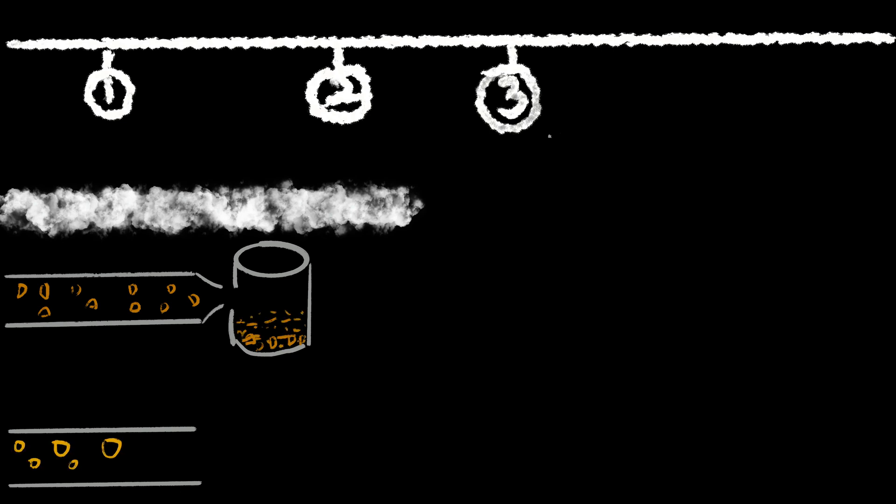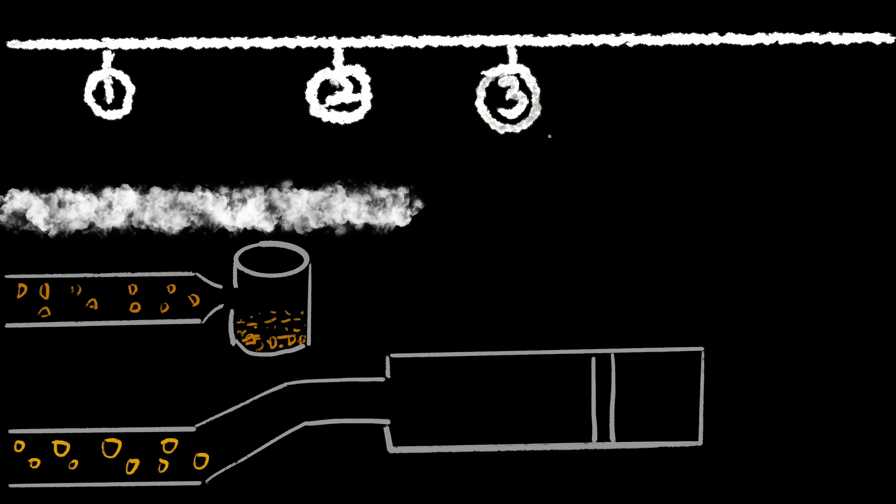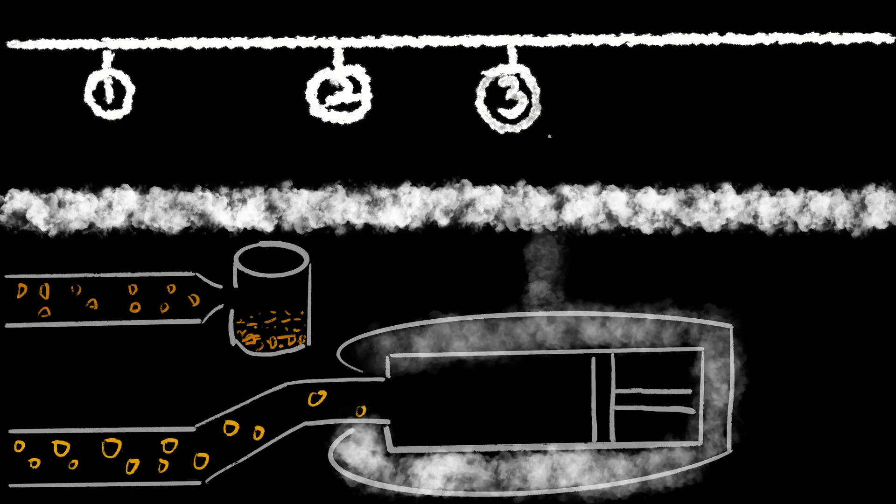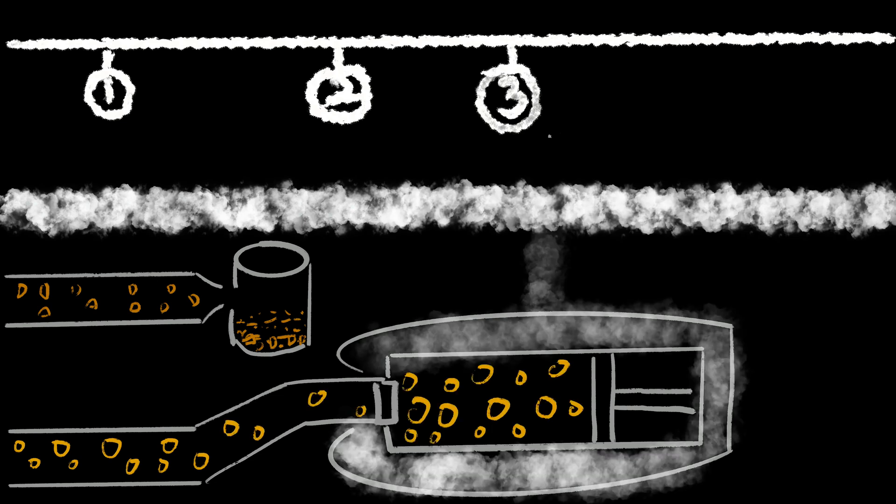Then, the hulls are kept separately to be dealt later, and the kernels enter a puffing machine, where when the kernels are being heated up by the steam, the pressure suddenly drops, causing the kernels to puff. This helps to extract more oil from the kernels.